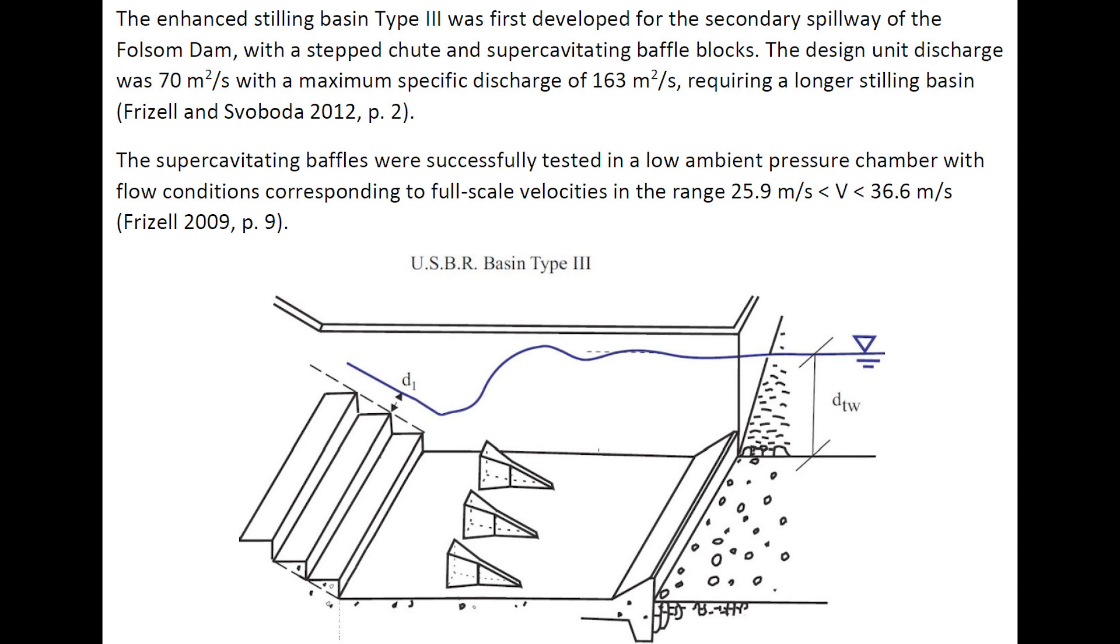The enhanced Stilling Basin Type III was first developed for the secondary spillway of the Folsom Dam with a stepped chute and supercavitating baffle blocks. The design unit discharge was 70 square meters per second, with a maximum specific discharge of 163 square meters per second, requiring a longer stilling basin. The supercavitating baffle blocks were successfully tested in a low ambient pressure chamber with flow conditions corresponding to full-scale velocities in the range of 26 to 37 meters per second.